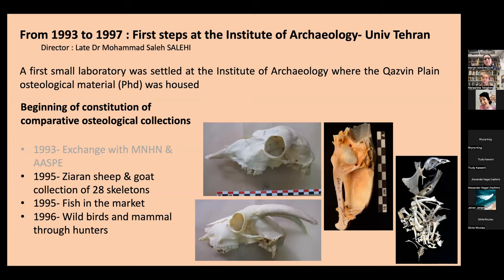I began to build collections myself, going into the field in different regions of Iran and collecting sheep and goat first, because these are the most abundant species in the assemblages. I began to collect modern sheep and goats to build up a local assemblage, using protocols and collecting all the information about the animals before slaughtering them. All these collections are now in Iran.